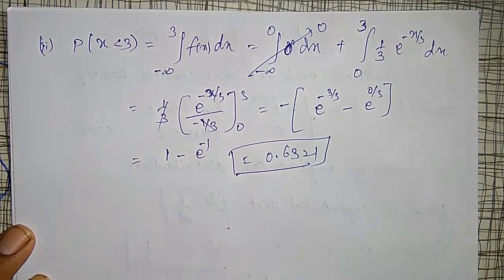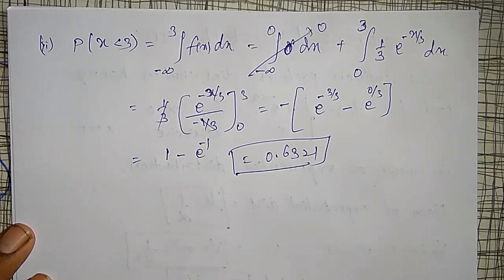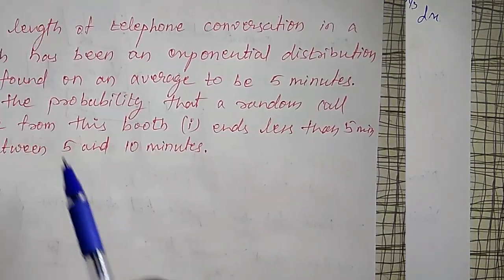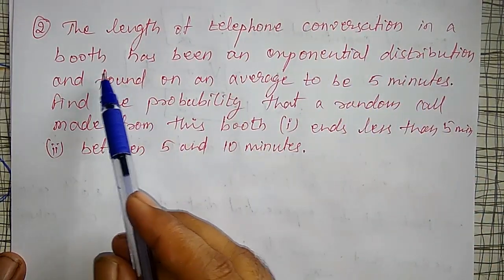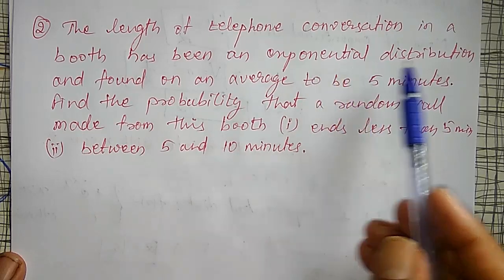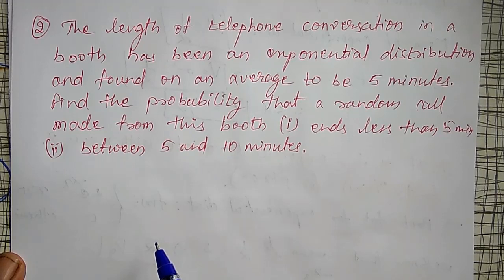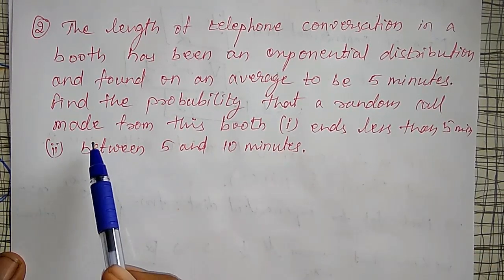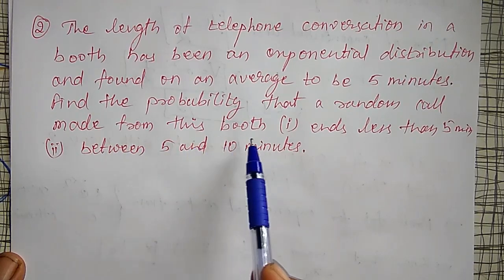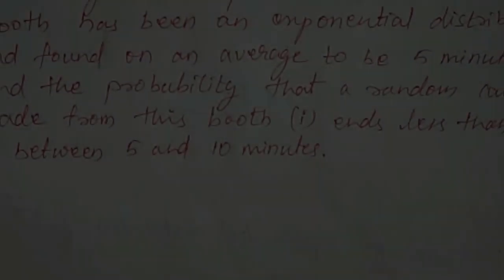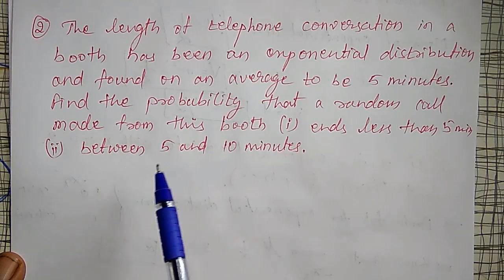The value comes out to be 0.6321 — you can use a calculator for this. This is a simple method. Moving to the next example: the length of phone conversations in a booth has an exponential distribution, found on average to be 5 minutes. Find the probability that a call ends in less than 5 minutes, in 10 minutes, and between 5 and 10 minutes.